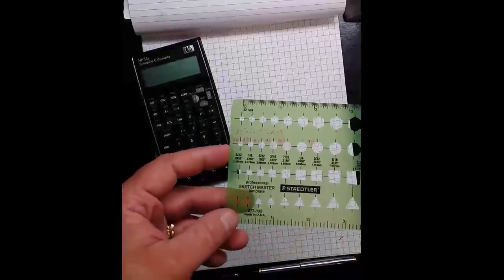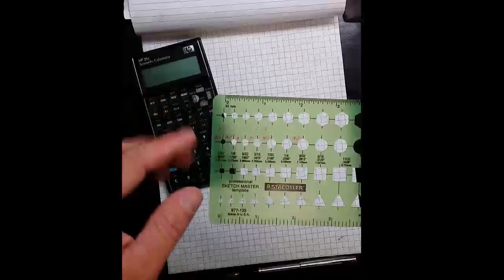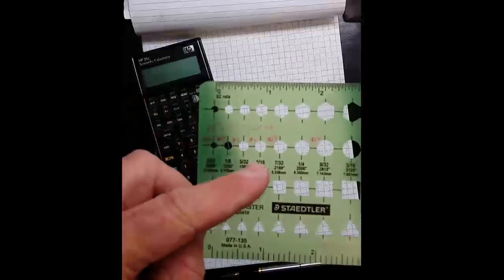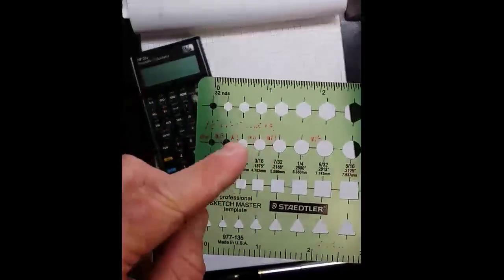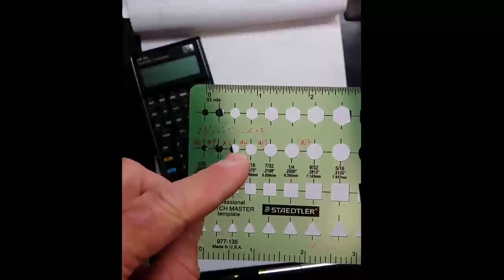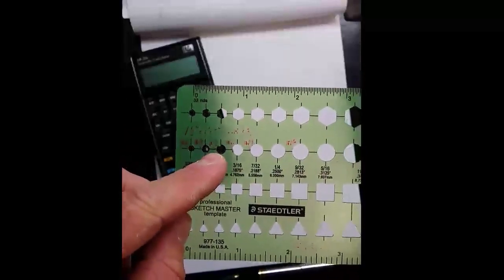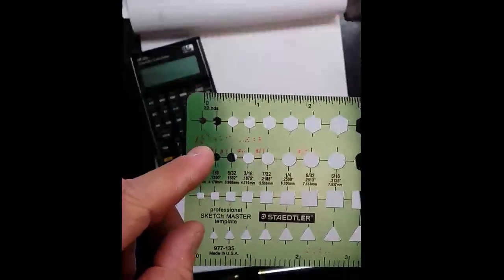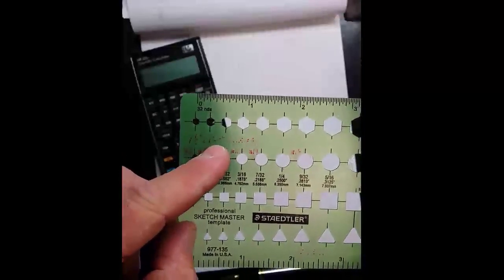Often structural engineers will have on their straight edge, they'll mark out different scales. For example, on this one, we've marked in the rebar sizes that correspond to these diameter circles at a particular scale of drawing. These are 1 1⁄2 inches equal 1 foot.